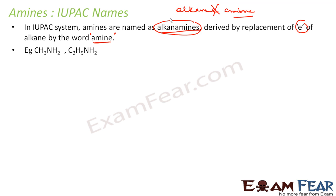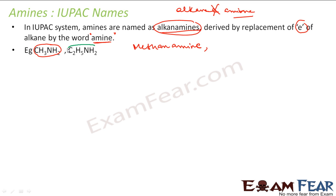For example, CH3NH2 is derived from CH4, that is methane. You replace the E with 'amine', so it becomes methanamine. Similarly, the compound derived from ethane will be ethanamine — don't write the letter E, instead write 'amine'. So we have methanamine and ethanamine.